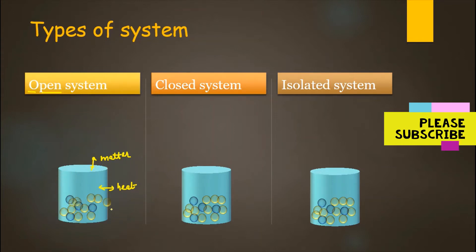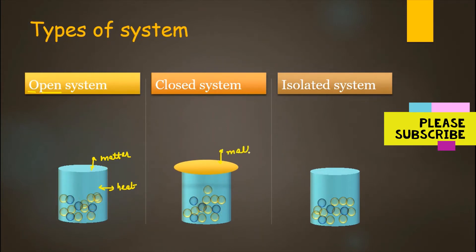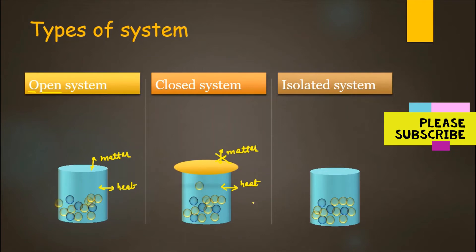Otherwise, you can place a lid on this open system. In this way, you prevent matter from being exchanged between the system and surrounding. But now, heat exchange through the walls of the container can still occur between the system and surrounding. So this system is called a closed system.